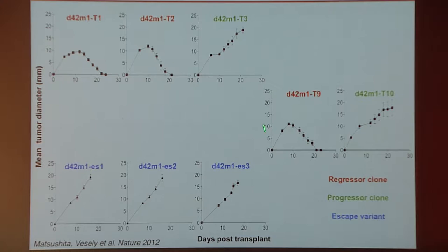We took this cohort of clones and selected three of the regressor clones, two of the progressor clones, and the three escape tumors, and collaborated with our colleague Elaine Martis, the co-director of Washington University's Genome Institute, who then did a significant level of exome sequencing on these tumors to define the mutational landscape.